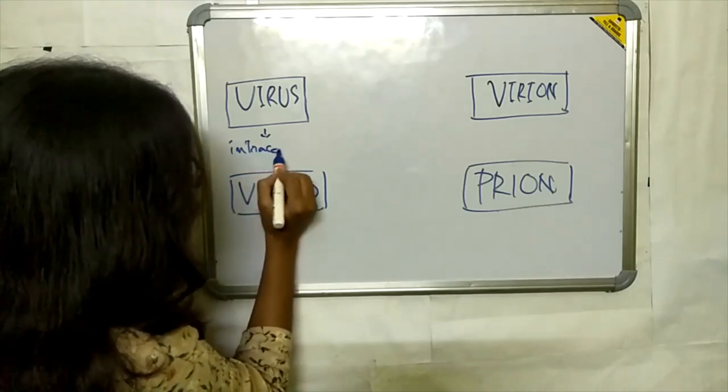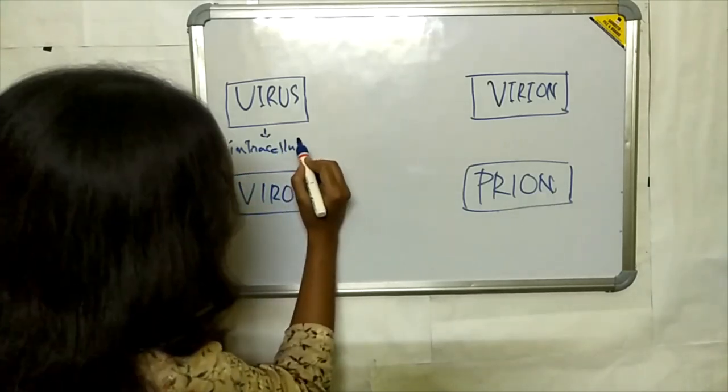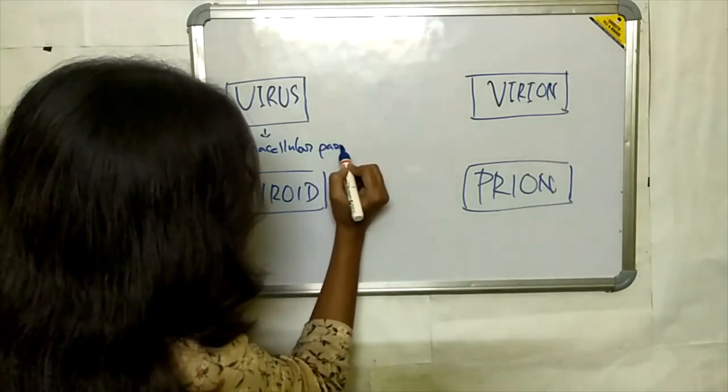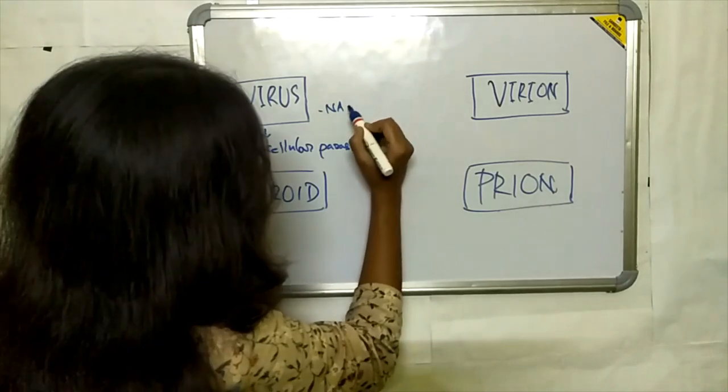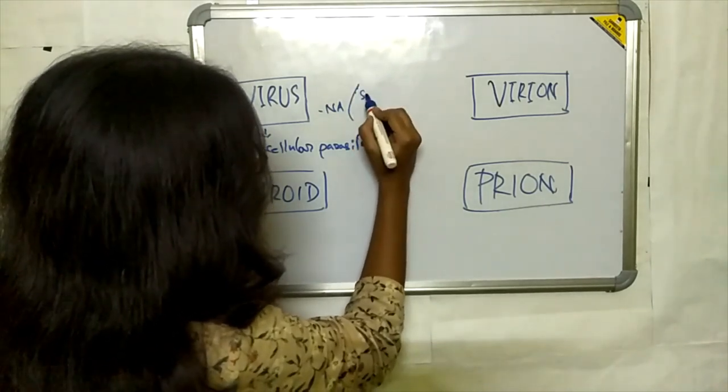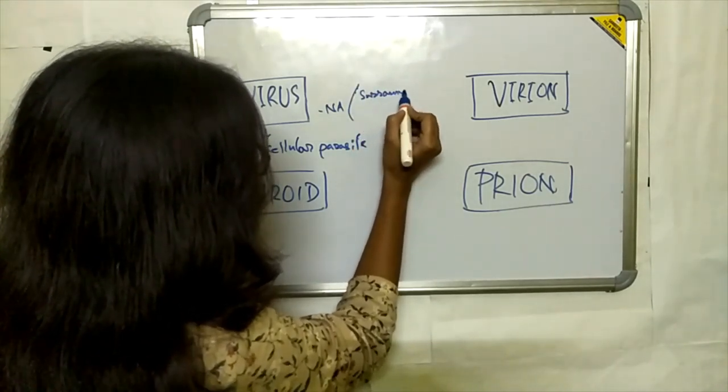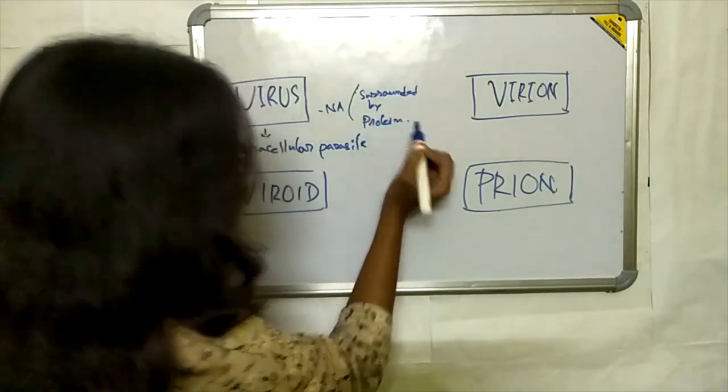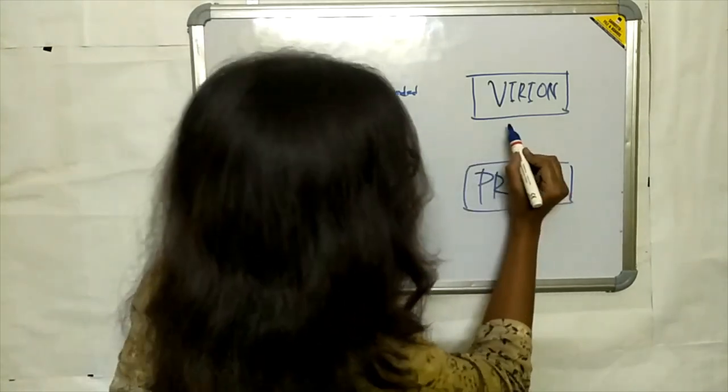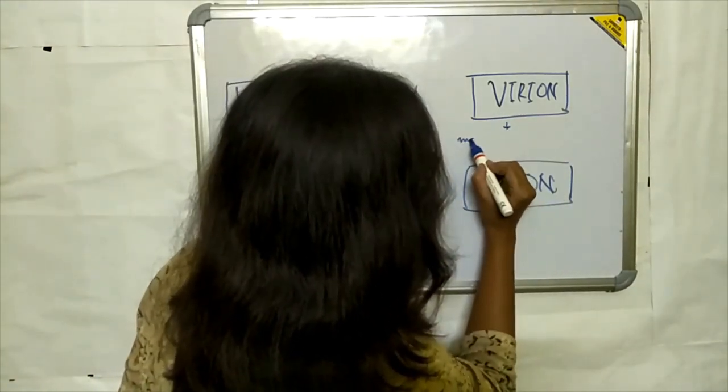Intracellular parasite, nucleic acid surrounded by protein, and virion are the metabolically inert state of virus.